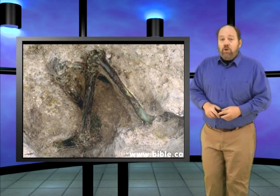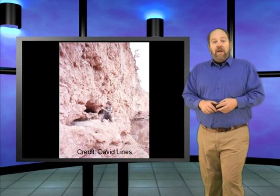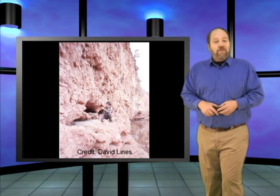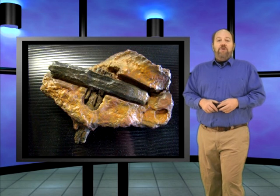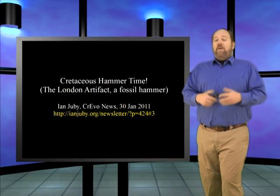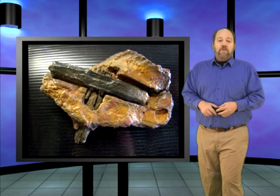We also find multiple human artifacts in rocks allegedly too old. Max Hahn and his family were fishing at a waterfall near London, Texas in 1936. He found a rock sitting on a ledge with a piece of wood sticking out of it. He broke open the rock to discover the wood was actually the handle of a fossil hammer. Named the London artifact, geologist John Watson was able to nail down the source rock several miles upstream — rock which dates to the Cretaceous, or the age of the dinosaurs, according to evolutionism. The most simple and obvious explanation is that the hammer was buried in the Cretaceous rocks when they were formed.